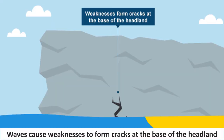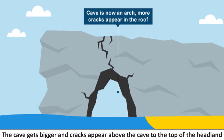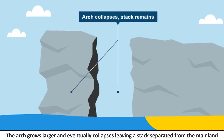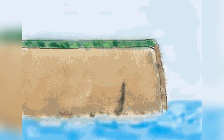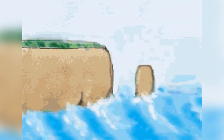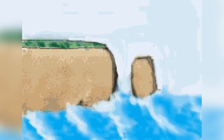But how do they form? Essentially, waves cause weaknesses to form cracks at the base of a headland. Over time, the cracks become larger to form a cave. The cave gets bigger and cracks appear above the cave to the top of the headland. Eventually, that weakens and the arch grows larger and eventually collapses, leaving a stack separated from the mainland. The stack continues to be eroded and becomes a stump. Here is a time-lapse GIF of this process — we can see it starts with a weakness that becomes a cave, which grows to become an arch, then a stack, and eventually a stump.